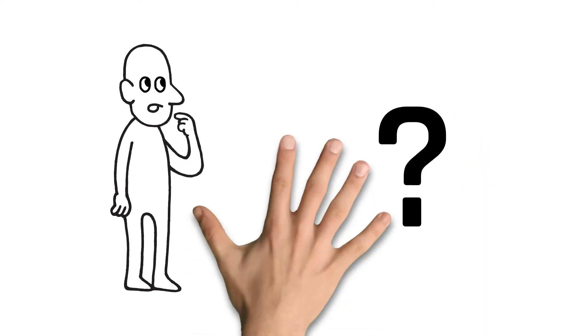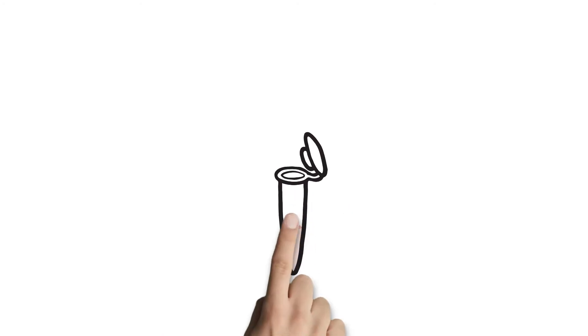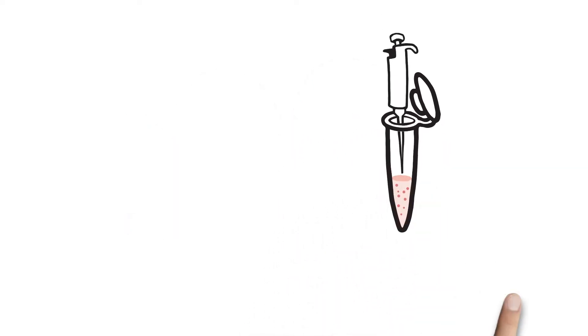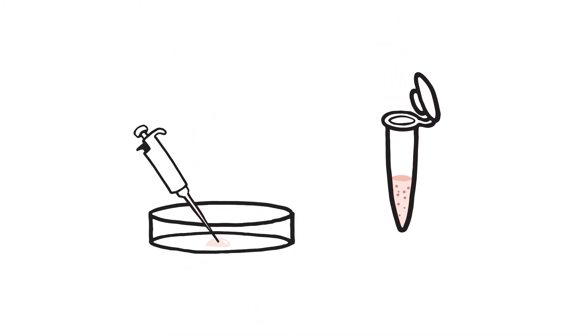And how do they do it? By combining all the necessary components to reproduce skin, including the different cell populations. This combination can be more or less complex depending on the part of the skin to be reproduced.